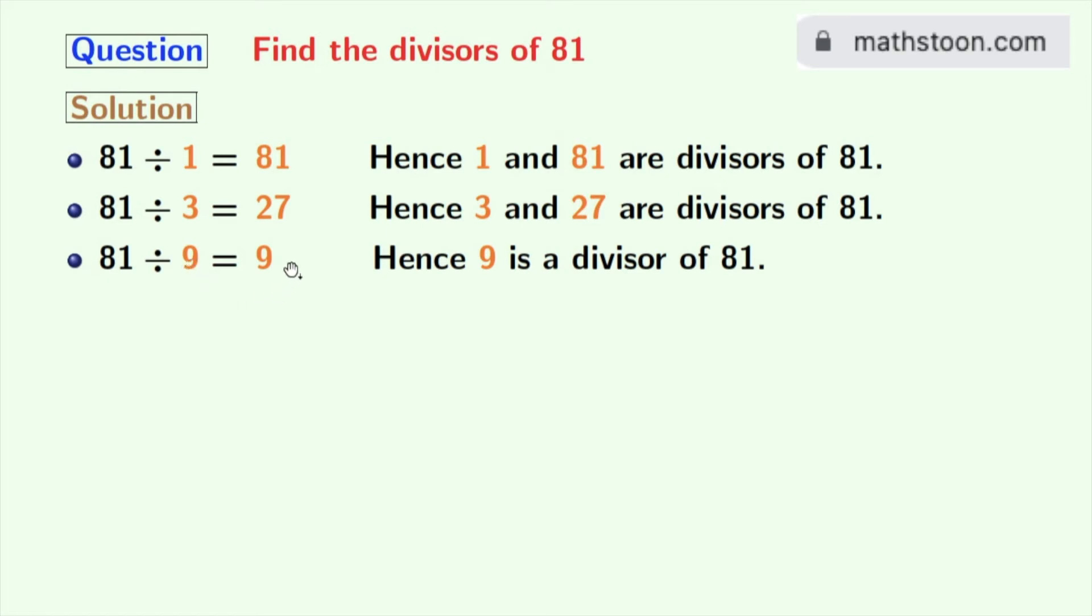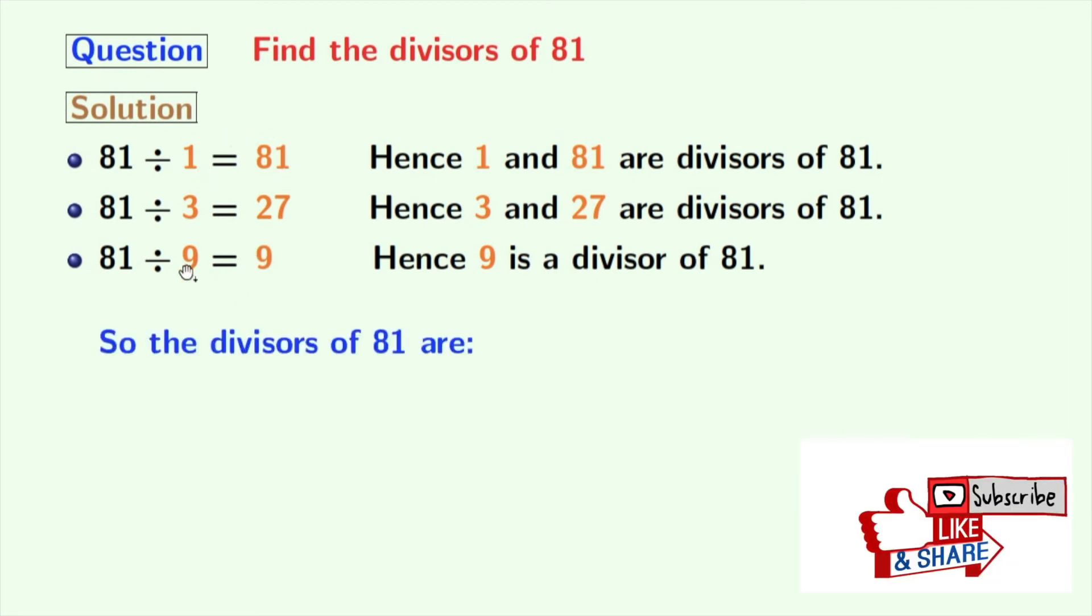Look that we have obtained the same numbers here. So we will stop right now. Now look that we have all the divisors of 81 in orange colors.